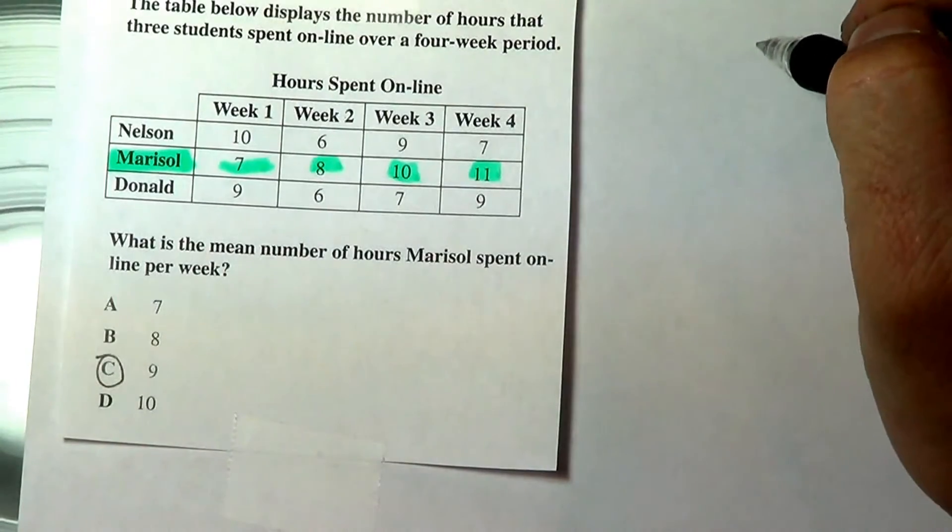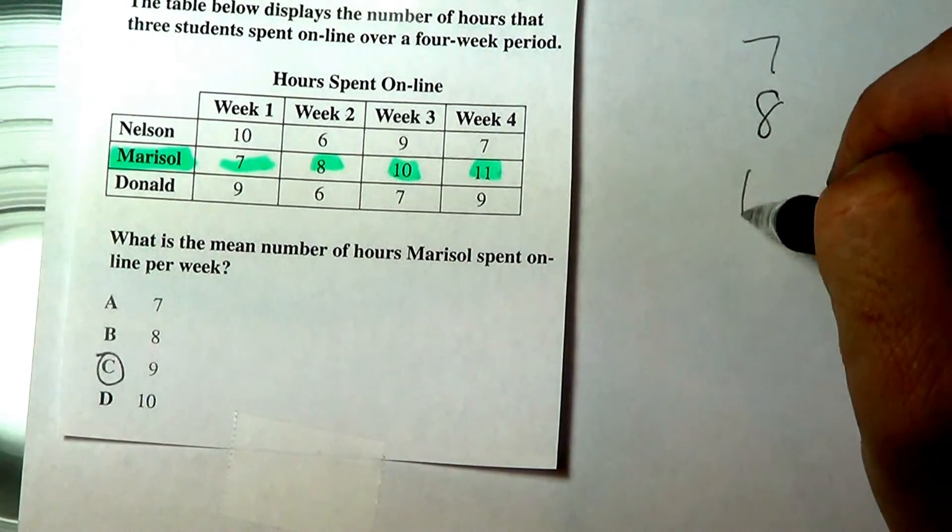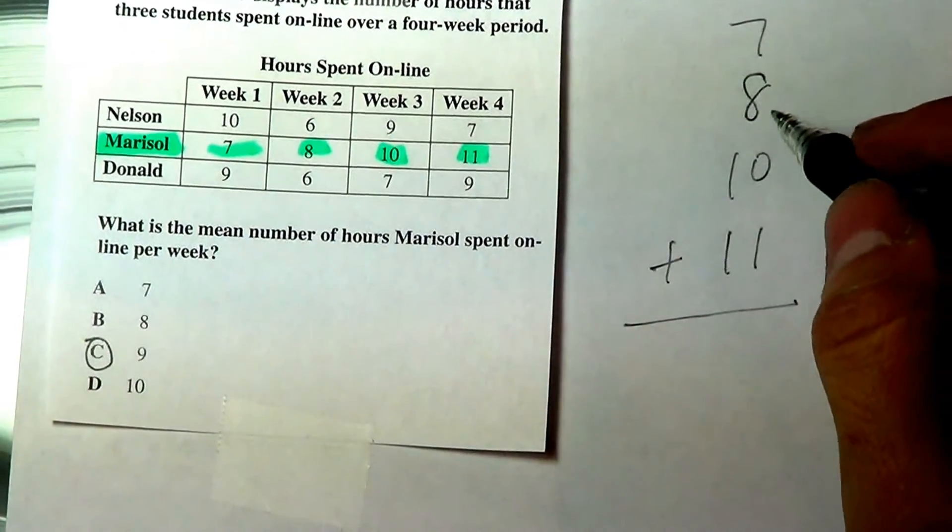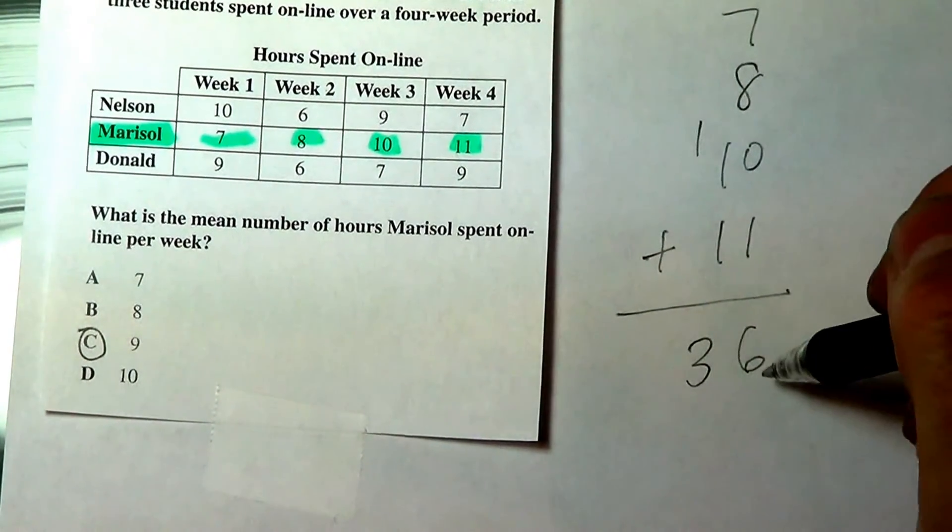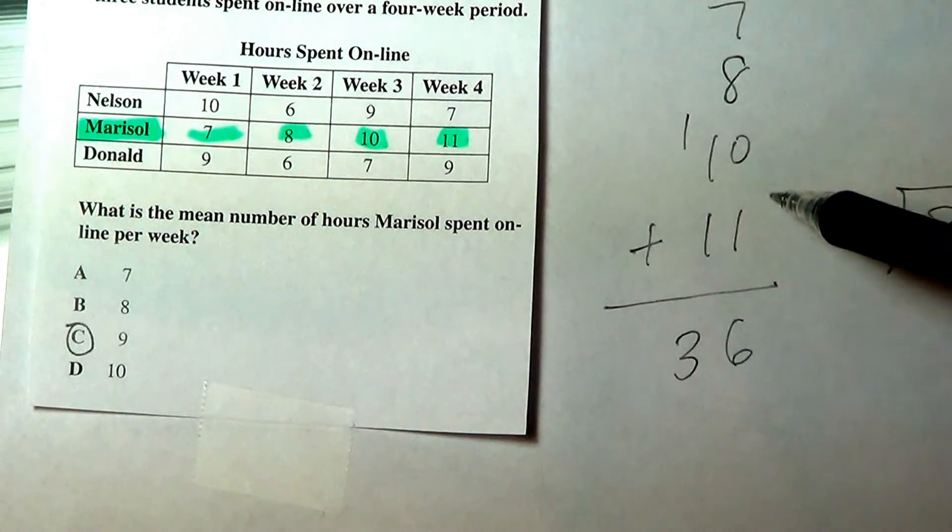So the mean is the average. Take all the number of hours that she spent and add them, and then take that number, the total, and divide it by the number of weeks she had.